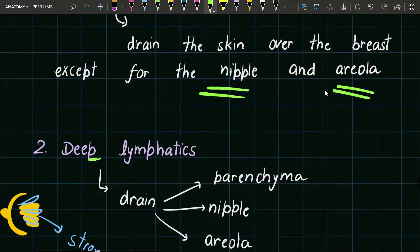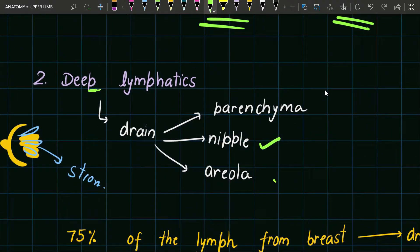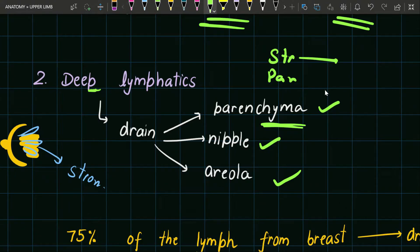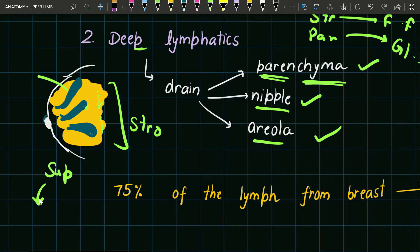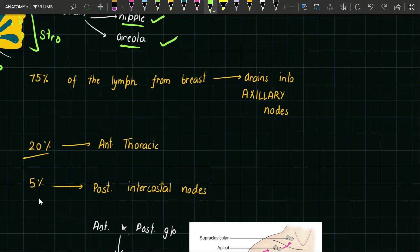Deep lymphatics drain the nipple, areola, and the parenchymal tissue. The breast is divided into two parts: stroma and parenchyma. Stroma is the fibro-fatty part present in the breast, while parenchyma is the glandular tissue. In the diagram, the yellow colored fibro-fatty portion is the stroma, while the deep blue colored glands are the parenchymal tissue. So deep lymphatics drain the parenchyma, nipple, and areola, while superficial lymphatics drain the complete skin over the breast except the nipple and areola.